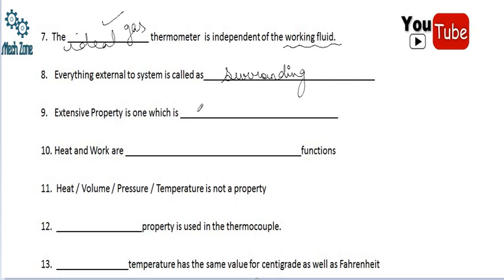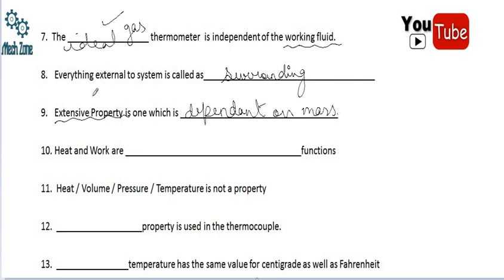Extensive property is one which is — blank. The extensive property is one which is definitely dependent on mass. So there will be a mass dependency in case of the extensive property.